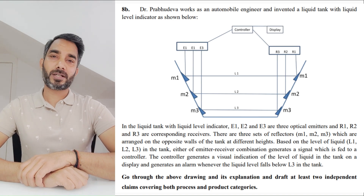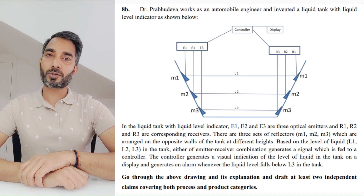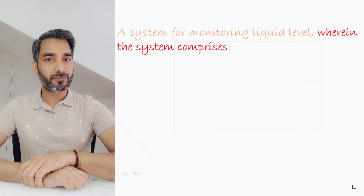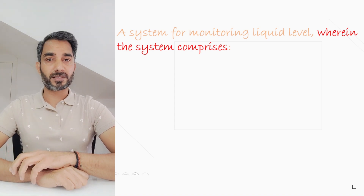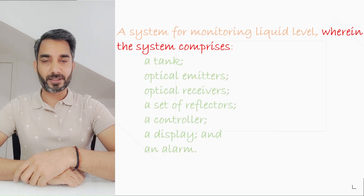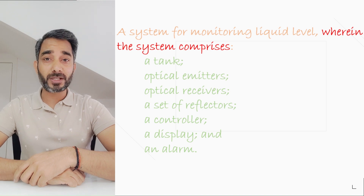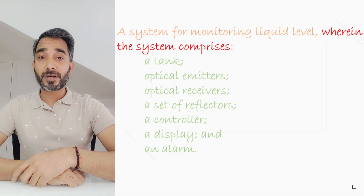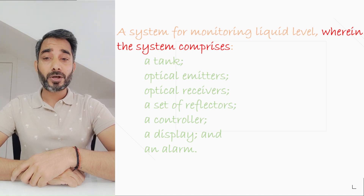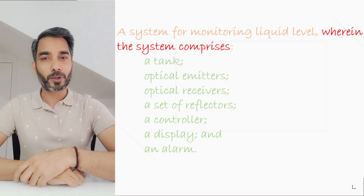How do we approach and decode this question? First, identify the preamble — we have identified this as the objective. Transition is the transition phrase. The next step is to write down all the components we can see. The first component is the tank, then we have three emitters, three receivers, a set of reflectors, a controller, a display, and an alarm. This is how our basic claim looks like.